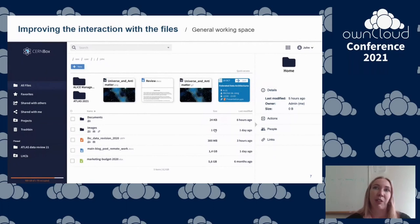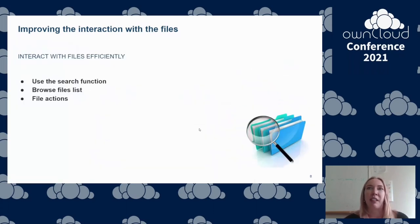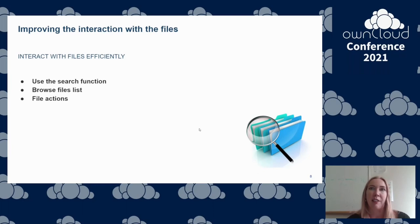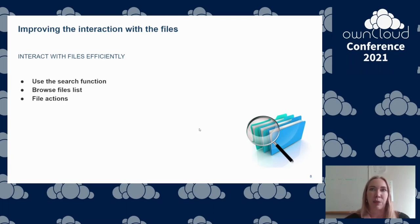CERNBox is based on ownCloud — it's basically the same working space as ownCloud. We will present some ideas for more efficient interaction with the files. The very important activity inside CERNBox that can be improved is the search for files. The two ways users basically do it is the searching function or browsing through the list of files. Another important activity is using the file actions for interaction.